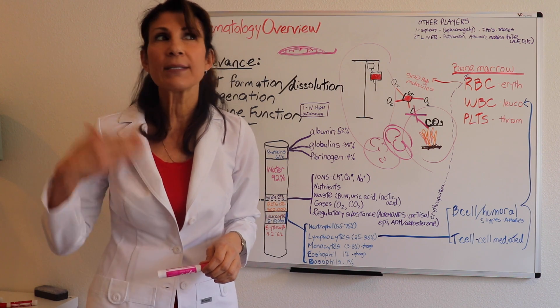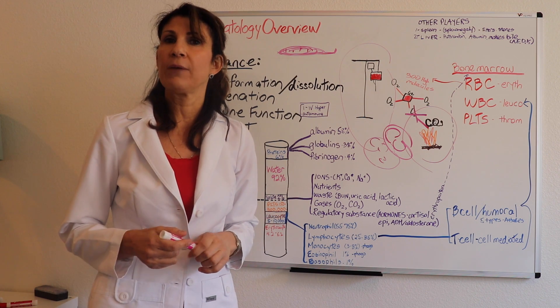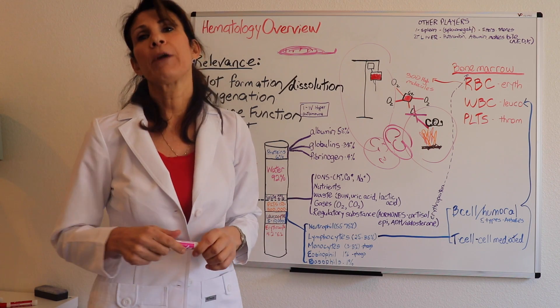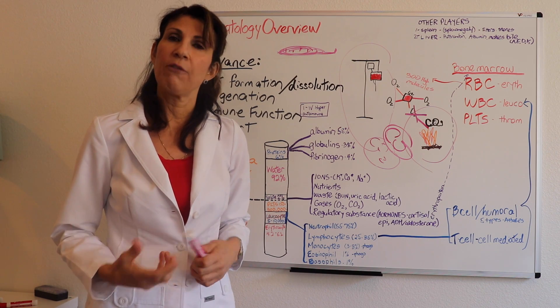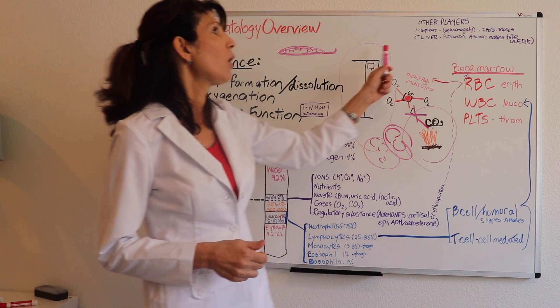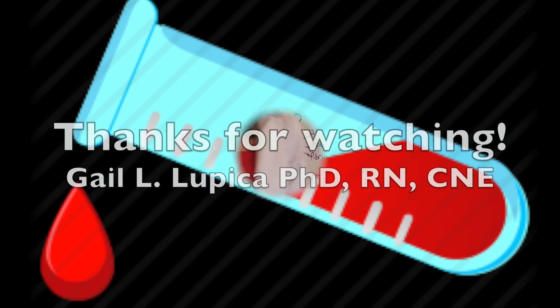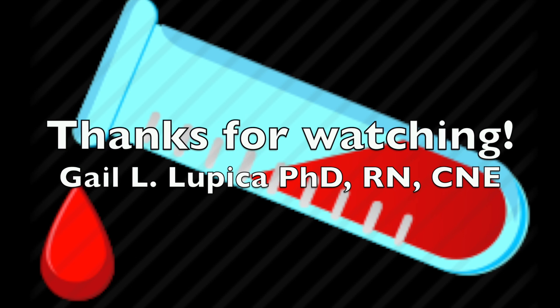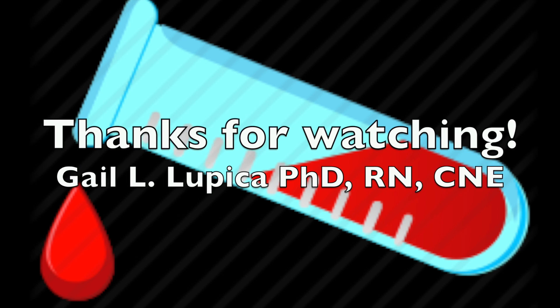Fat-soluble vitamins—let's think about which ones they are. A, E, D—important, important, important—and K. Very important. Without the absorption of vitamin K, what do you get? Bleeding. So this all ties in.